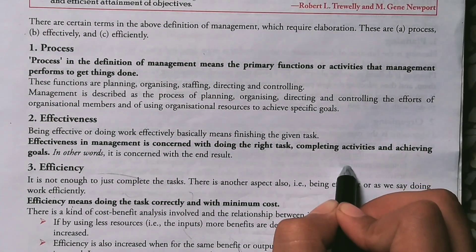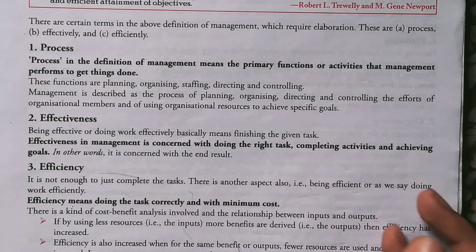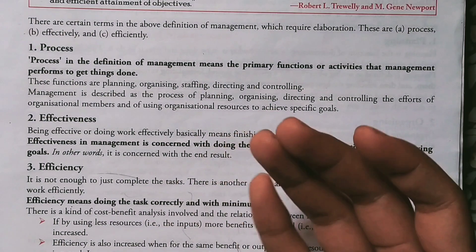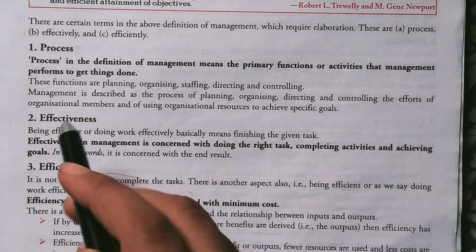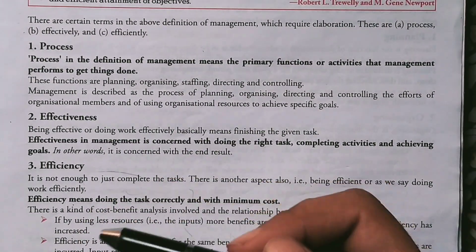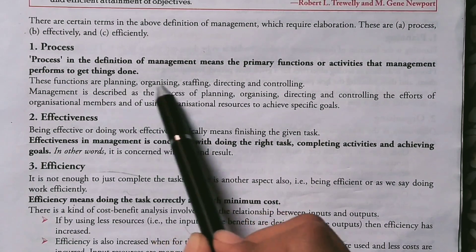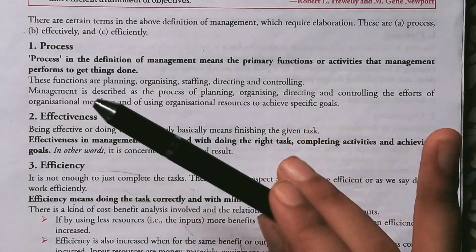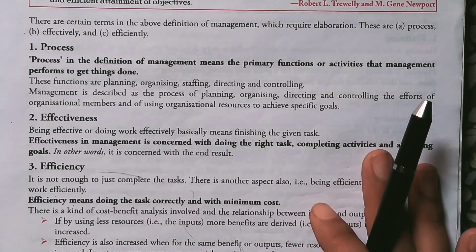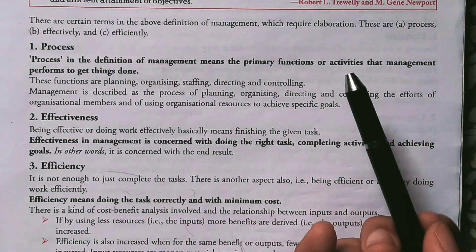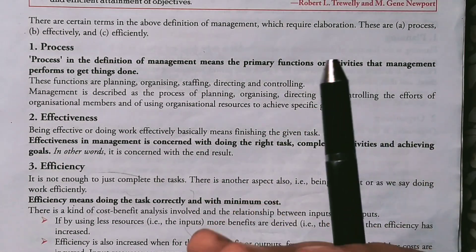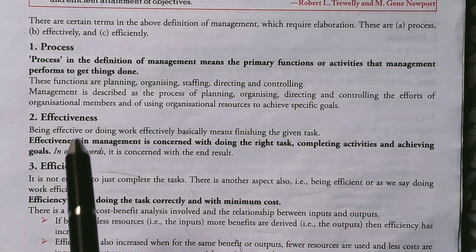For example, until or unless you know the ABCD, you are not able to write. That is our primary function. Here we have planning as our main primary function which we can't go ahead without. The five functions are: planning, organizing, staffing, directing, and controlling. Each of these is a different chapter with very detailed study for each concept. These are primary activities that one should do to complete their goals and objectives.